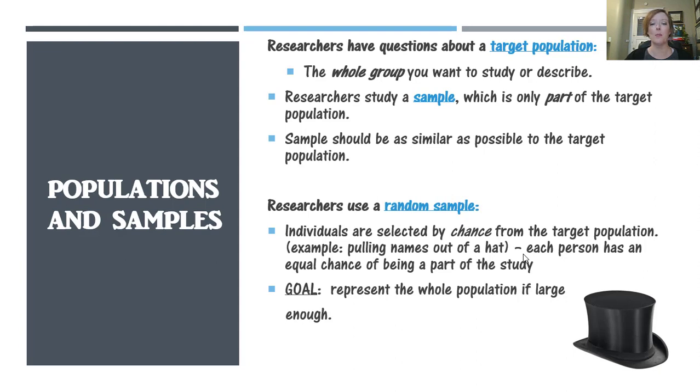Individuals in a random sample are selected by chance. It's basically like someone reaching into a hat and pulling out a name. Each person has an equal chance of being part of that study. And so the goal of a random sample is to represent the whole population if the sample is large enough and if it is done correctly.